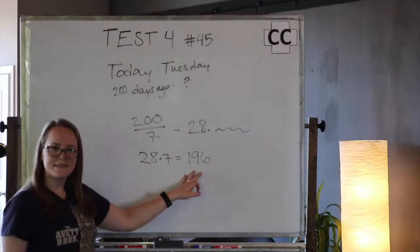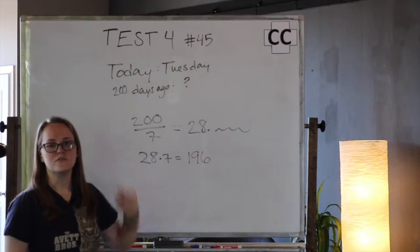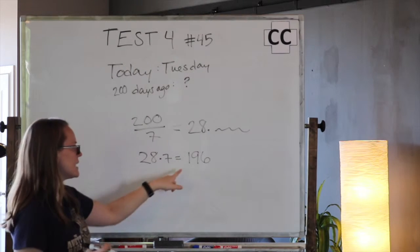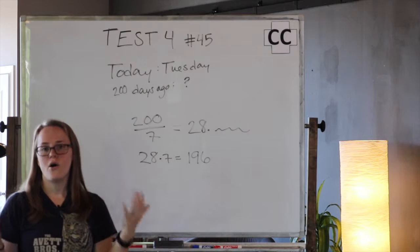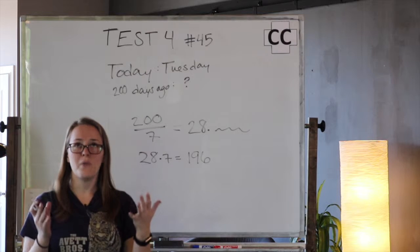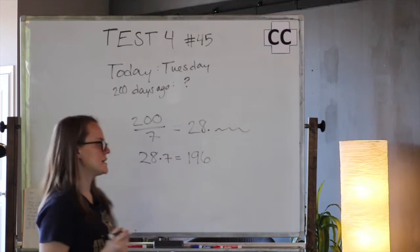So 196 days ago, it was also Tuesday because that was 28 complete weeks ago. So since 196 days ago was Tuesday, all we need to do now is count back a few days to figure out what day of the week it was 200 days ago.